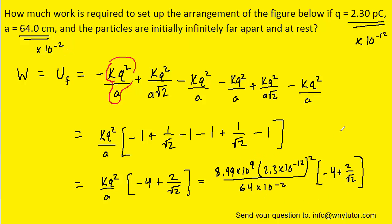And when you plug all that into your calculator, you should get a value of approximately negative 1.92 times 10 to the negative 13 joules. So that would be the work required to set up that arrangement of charges.